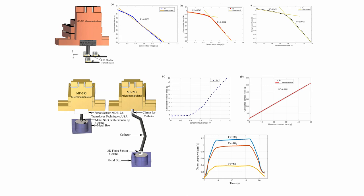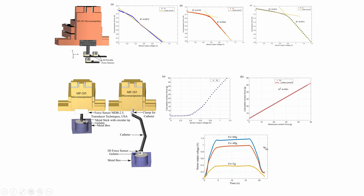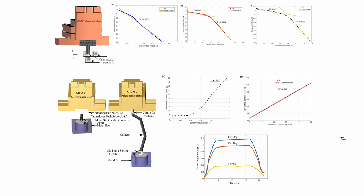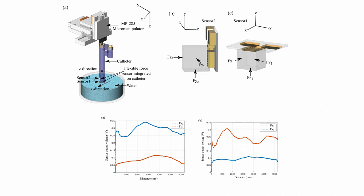For example, applying 5 grams of force and removing it shows the response time; the same is done for 40 grams and 60 grams, confirming the sensor measures from 5 grams to 60 grams. The optimum ablation force on the heart is around 35 to 40 grams. So when the catheter is ablating heart tissue, the ablation force should not exceed 35 to 40 grams. When the catheter is inserted inside the heart through blood vessels, the sensor's behavior in a liquid medium must also be characterized.